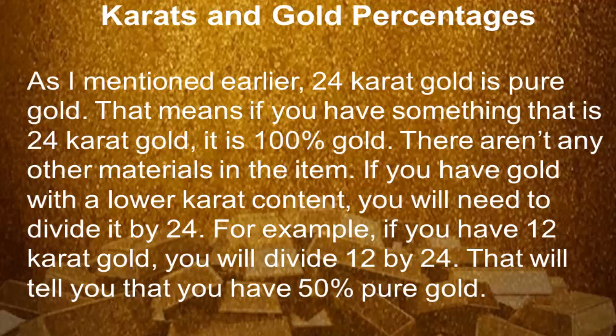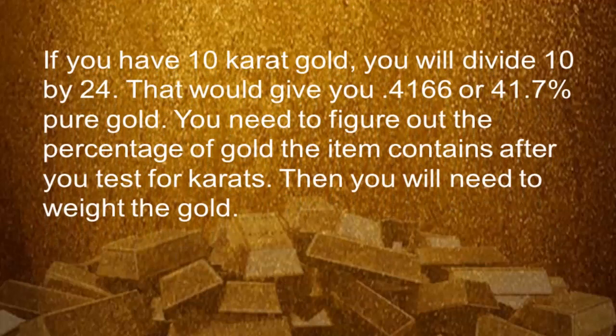As mentioned earlier, 24 carat gold is pure gold, meaning it is 100% gold with no other materials in the item. If you have gold with lower carat content, you will need to divide it by 24. For example, if you have 12 carat gold, you divide 12 by 24 — that tells you you have 50% pure gold. If you have 10 carat gold, you divide 10 by 24, which gives you 0.4166, or 41.7% pure gold. You need to figure out the percentage of gold the item contains after the carat test, then you will need to weigh the gold.